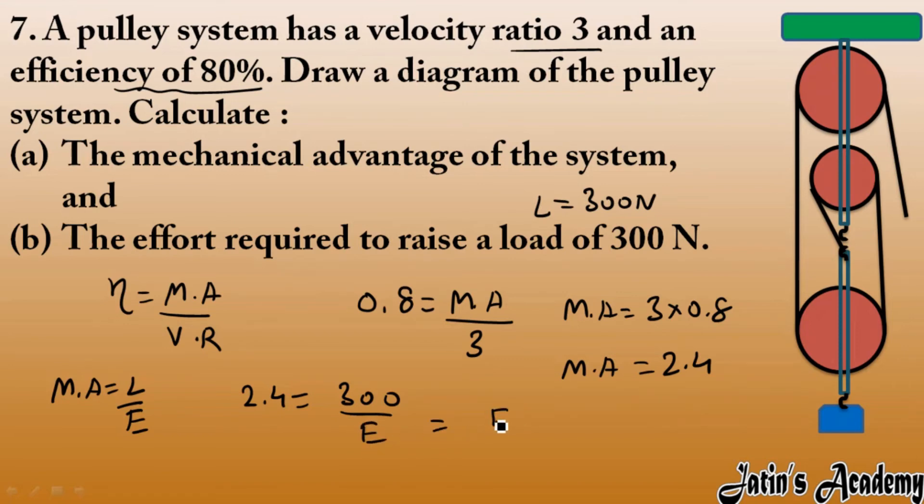So effort we got it as 300 by 2.4, so 300 by 2.4 we got it as 125 Newton. So it means that effort required to raise a load of 300 Newton is just 125 Newton. Clear?